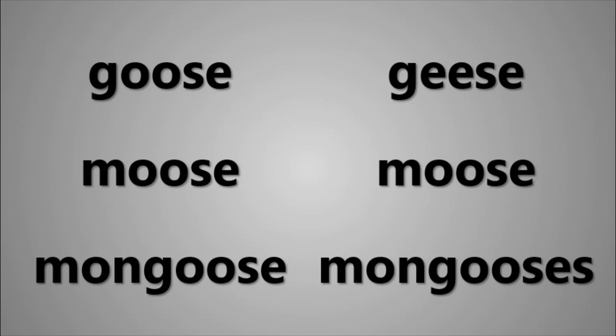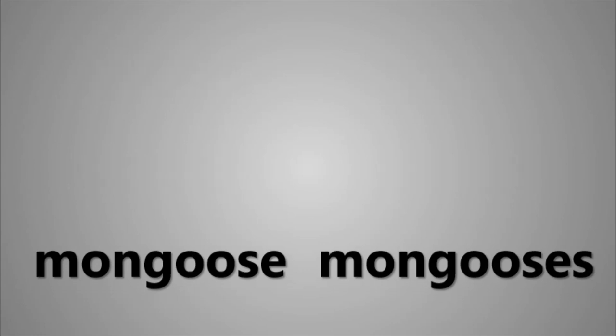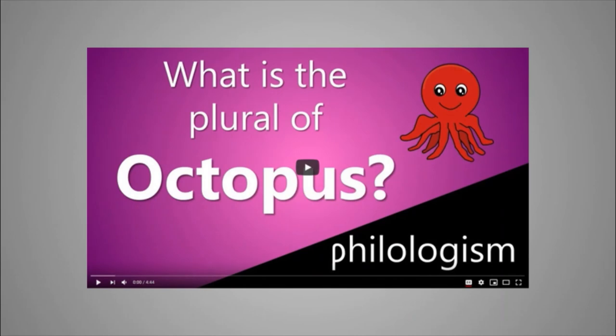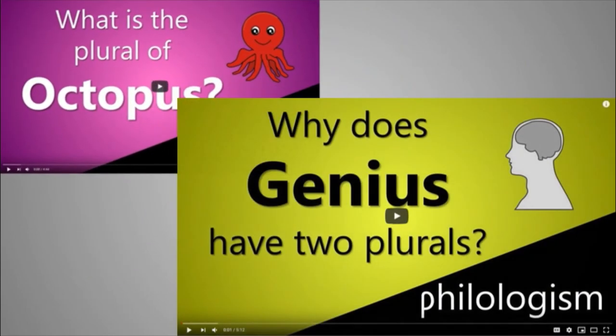And if mongoose came to English through Portuguese, adding an S to make the word plural matches what Portuguese does. In one of my earlier videos, I explained the plural of octopus — do you think you know what it is? And in another one, I revealed that the word genius has two plurals. Find out why by watching the video.